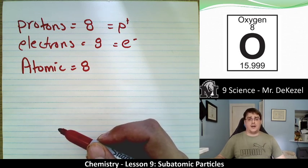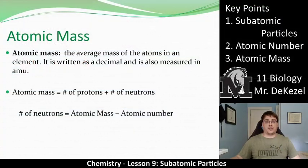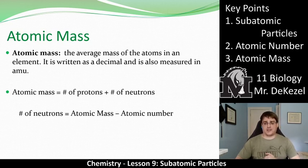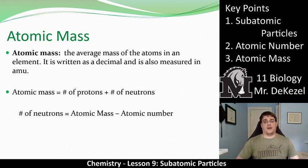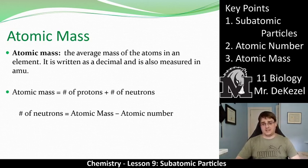So whenever you look at the periodic table — for example, lithium has atomic number 3, so it has 3 protons and 3 electrons. Now let's talk about atomic mass, the bottom number. Atomic mass is the average mass of all atoms in an element, written as a decimal, but we always round it to the nearest whole number. We can find the number of neutrons by taking the atomic mass and subtracting the atomic number.